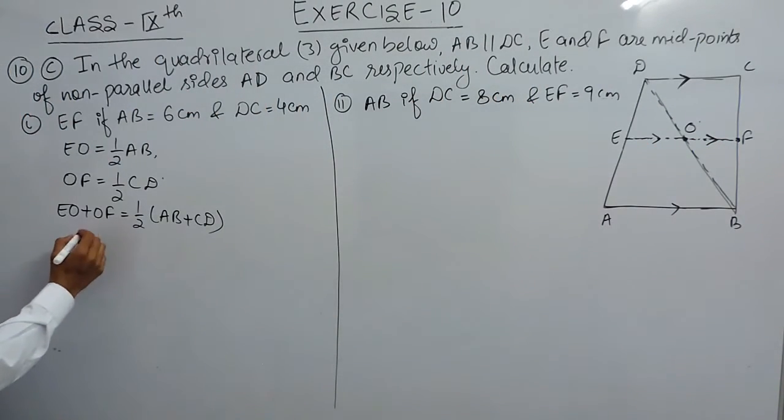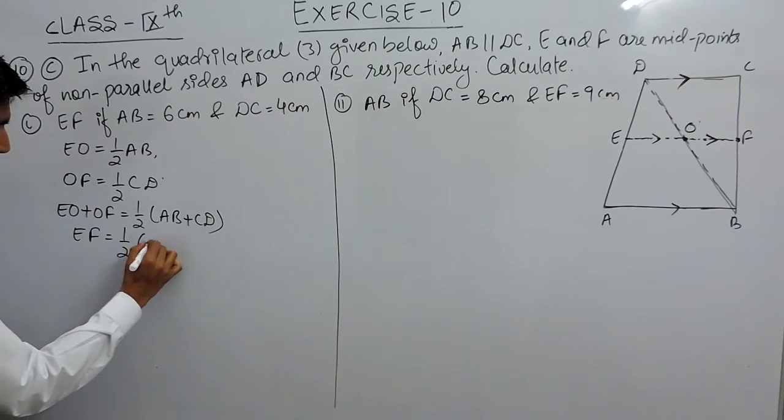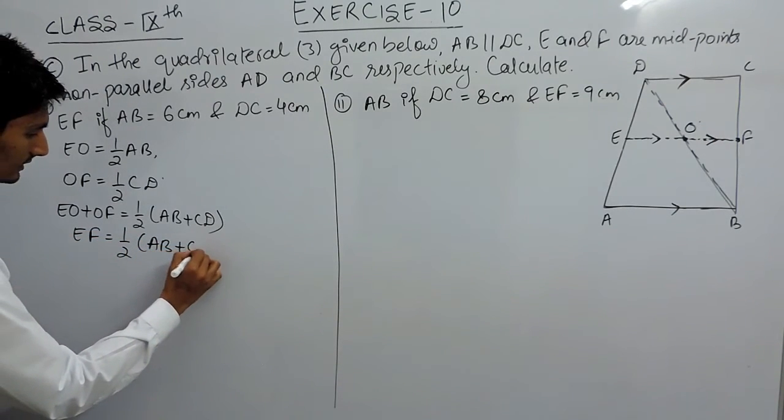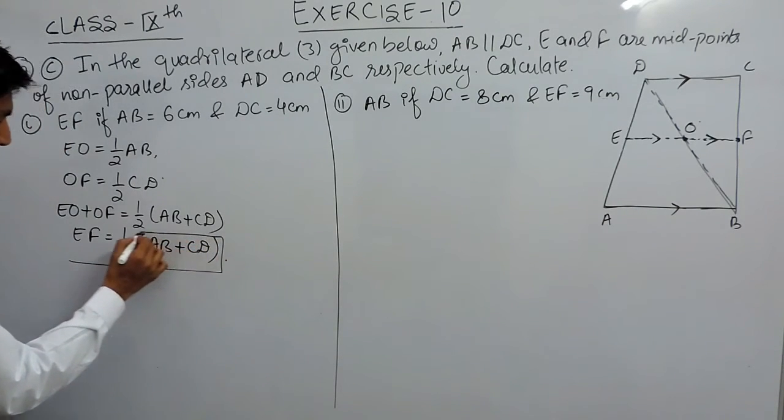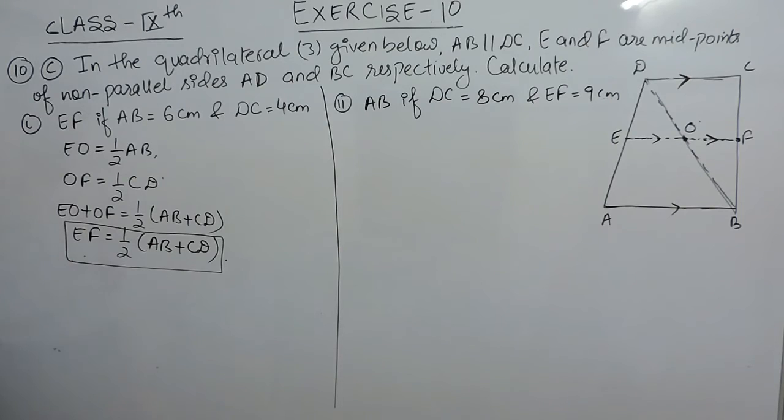In place of this, I can write EF equals half of AB plus CD. This can be considered as a formula to solve this question.